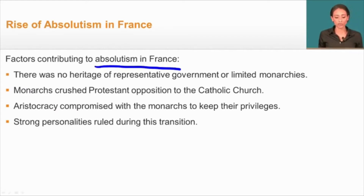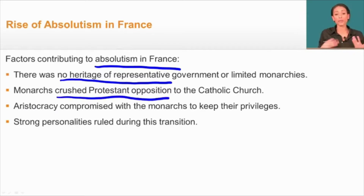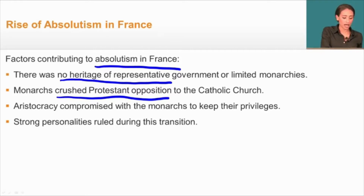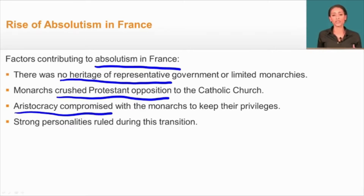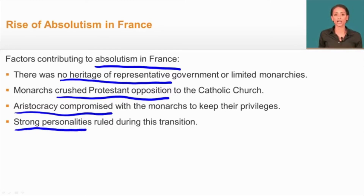There were four key factors contributing to absolutism in France. First, there was no heritage of representative government or limited monarchies — only a history of very powerful leaders. Second, monarchs were successful in crushing Protestant opposition to the Catholic Church. Next, the aristocracy — the noble people — compromised with the monarchs to keep their privileges, believing they had more chance of keeping their wealth by supporting the king, and they also saw freedom from taxes. Finally, there were strong personalities ruling during this transition who really took advantage of their charisma.